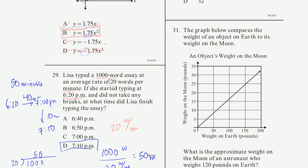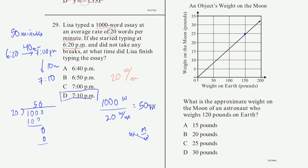Problem 31: The graph compares the weight of an object on Earth to its weight on the moon. For example, something that weighs 150 pounds on Earth weighs about 25 pounds on the moon — essentially one-sixth of the Earth weight.